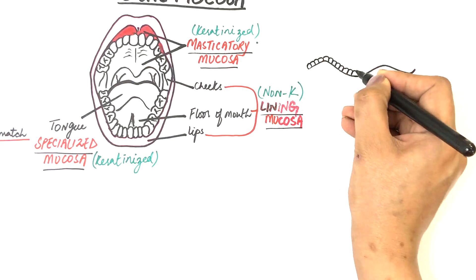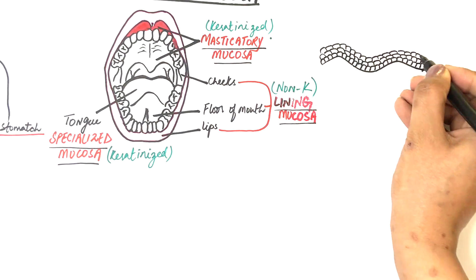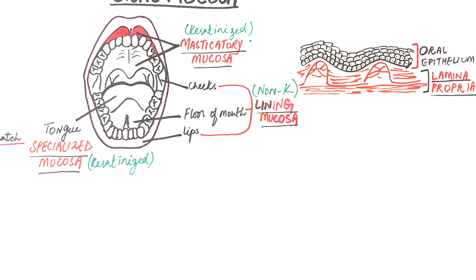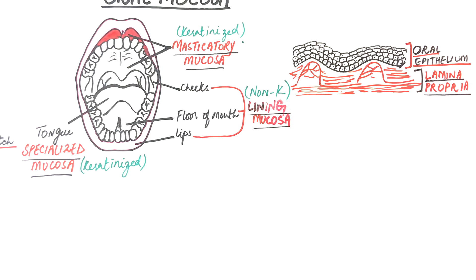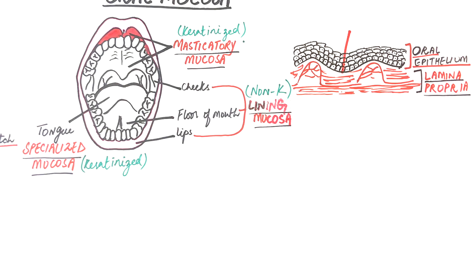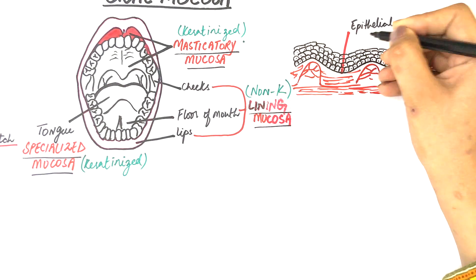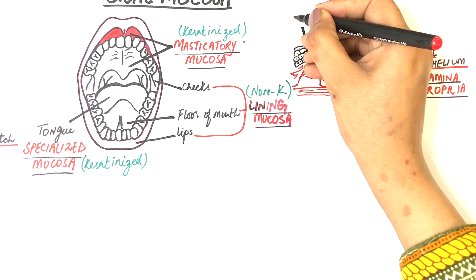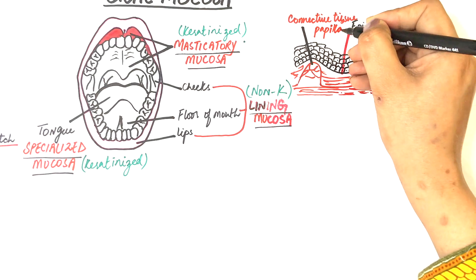The two main components of the oral mucosa are the superficial oral epithelium and an underlying connective tissue called the lamina propria. The superficial layer is made up of stratified squamous epithelium. Its irregular shape creates finger-like projections of the oral epithelium embedded in the underlying connective tissue or lamina propria. These finger-like projections of the superficial oral epithelium are termed epithelial rete ridges, while the upward projections of the lamina propria are termed connective tissue papillae.